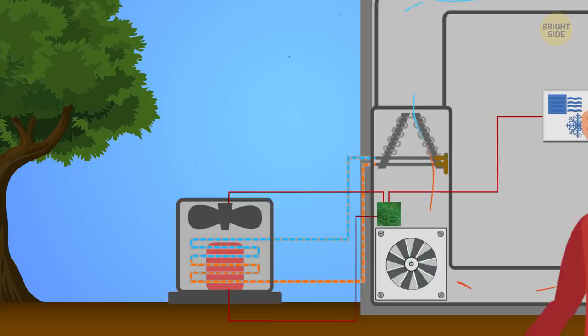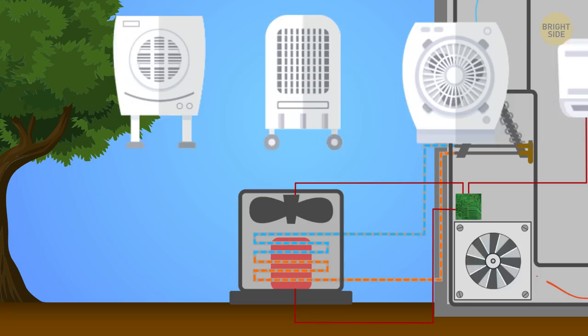So let's go outside to check out the outdoor unit. It differs model-to-model and brand-to-brand, but in general, it looks like a box with a fan in the rear or side of your house.